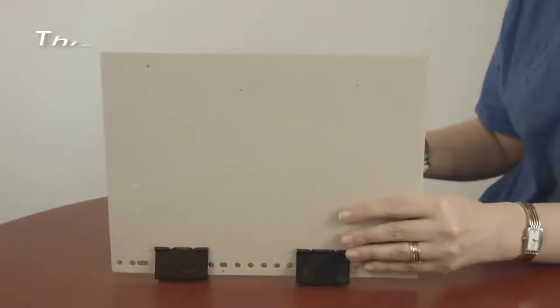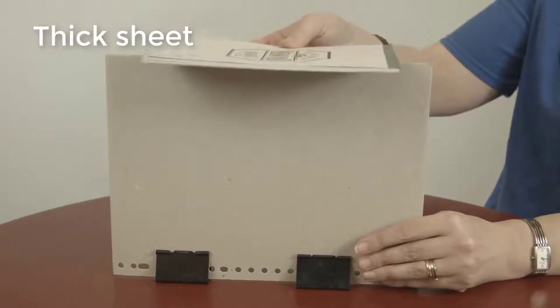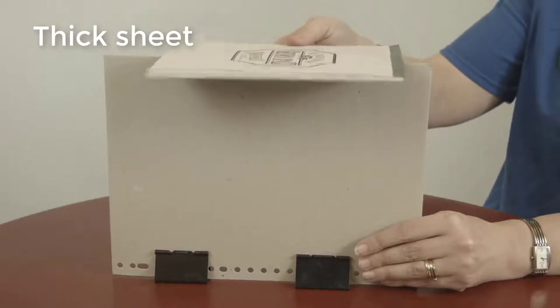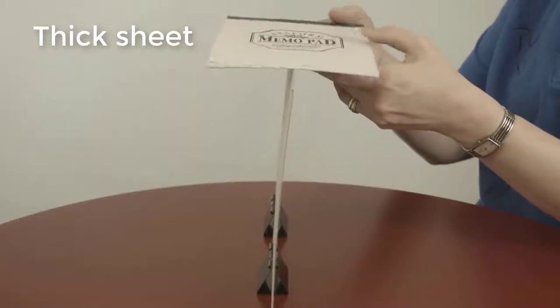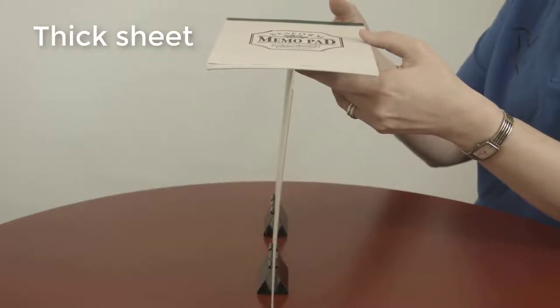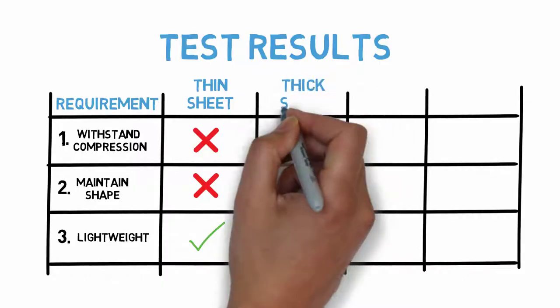What if we try a slightly thicker piece of cardboard? Maybe that would have a different effect. Here we have the back cover of a spiral bound notebook. Once we actually manage to balance the notepad, it looks like we do have a structure that supports the weight and doesn't bend out of shape.